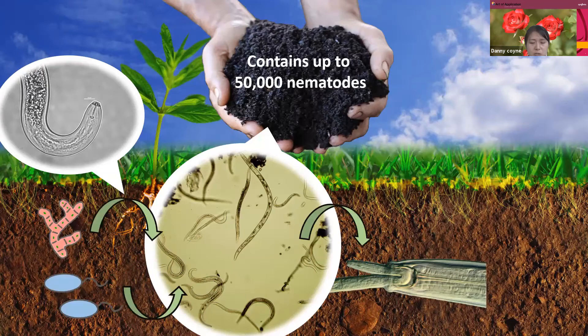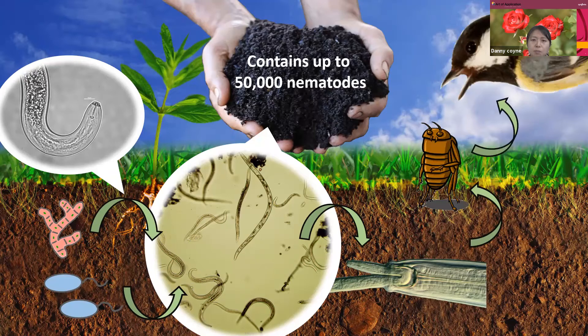These nematodes can be eaten by arthropods, and arthropods are a food source for larger animals like birds. This is a simplified version, but you can see that nematodes play a very important role in the soil ecosystem through carbon and nitrogen cycles. Nematodes are also an important bioindicator for understanding soil health conditions.